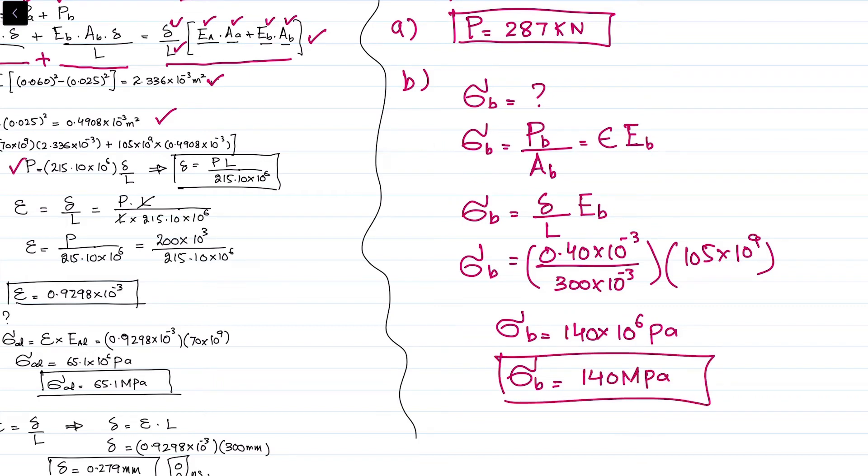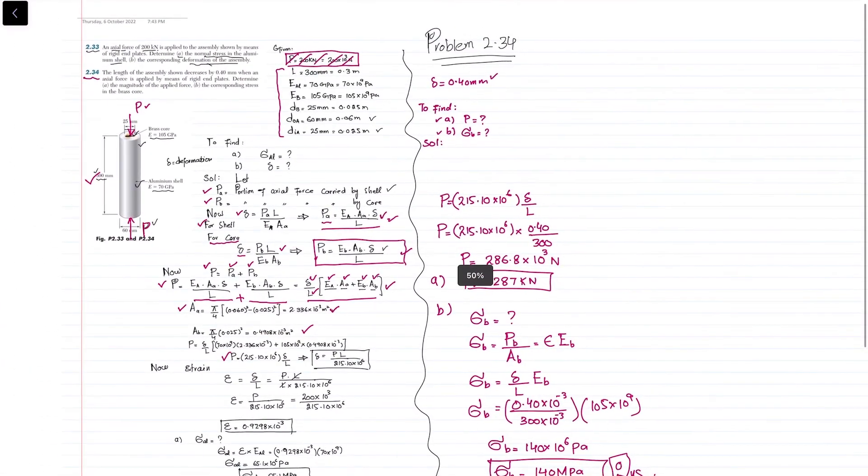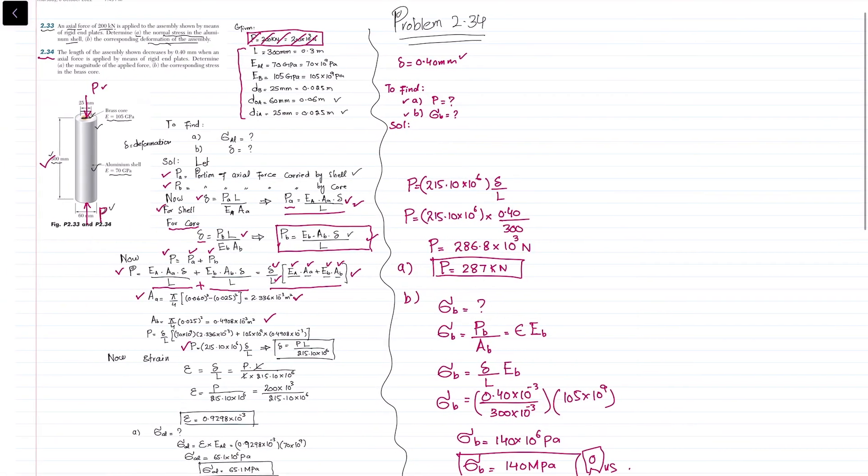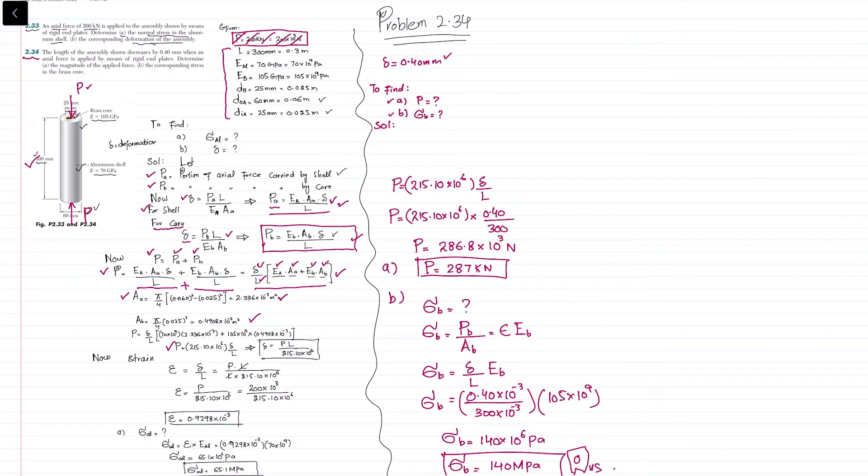This is the answer. I hope you have a clear idea about problem 2.34. Both 2.33 and 2.34 are interrelated because the data is the same, only some given data and required outputs are changed. That's why I preferred not to solve it again and continued by referencing the solution of 2.33. Thank you for watching.